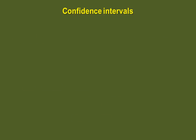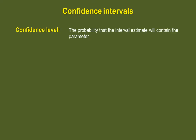As I said before, an interval may or may not contain the actual parameter. We can assign a degree of confidence or confidence level, which is the probability that the interval estimate will contain the parameter. Combined with the interval estimate, we end up with the confidence interval, which is a specific interval estimate of a parameter determined by using data obtained from a sample and by using the specific confidence level of the estimates.